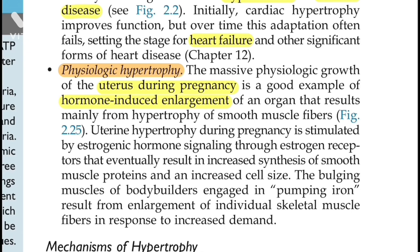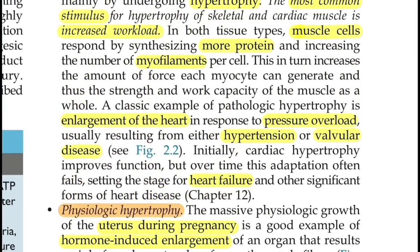Uterine hypertrophy during pregnancy is stimulated by estrogenic hormone signaling through estrogen receptors, eventually resulting in increased synthesis of smooth muscle proteins and increased cell size. All you need to mark is the estrogen receptor signaling part. The bulging muscles of bodybuilders result from enlargement of individual skeletal muscle fibers in response to increased demand — something we already covered, so we don't need to note it again.